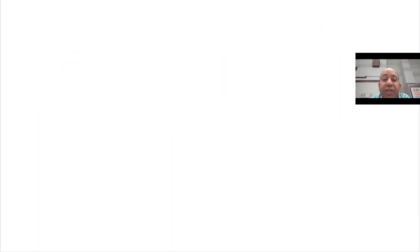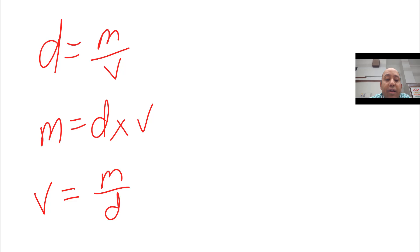So, you have to be able to rearrange the equation d equals m over v into its parts. So, into the other equations. We have m equals d times v when you multiply both sides by v. Or, you can solve for v, which is m over d. Right? You multiply both sides by v, and then divide both sides by d.